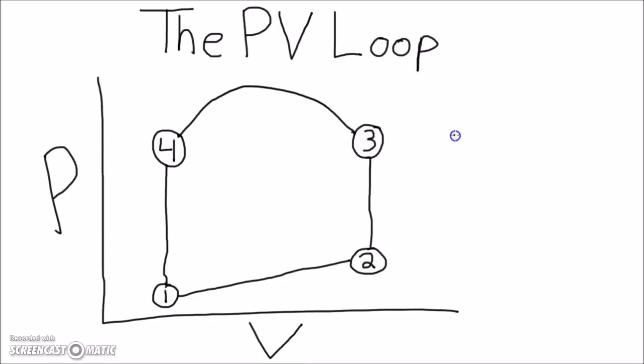We're going to be focusing on the left ventricle only, although the PV loop occurs in the right ventricle as well. Let's recall the anatomy of the heart. Here's the ventricle.